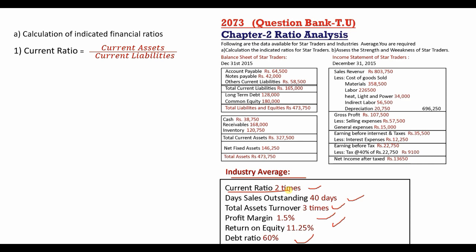Current assets total $3,27,500. Current liabilities include accounts payable, notes payable, and other current liabilities, totaling $1,65,000. Current ratio = $3,27,500 divided by $1,65,000 = 1.98 times, which is nearly equal to the industry average.